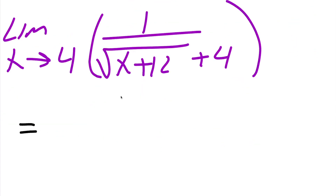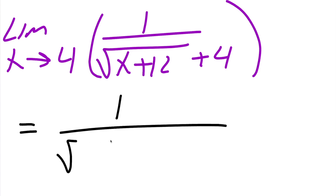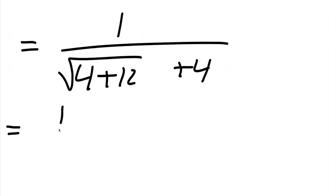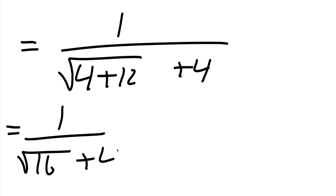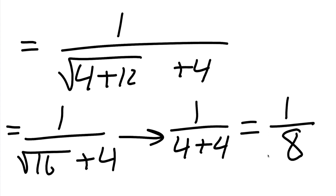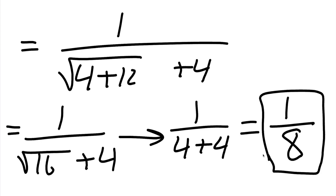We're going to get 1 divided by the square root of 4 plus 12, outside there's a plus 4. The square root of 16 is 4, so we get 1 divided by 4 plus 4. And 4 plus 4 is 8, so we get 1 divided by 8 as our final answer. That's all we need to do for this problem.